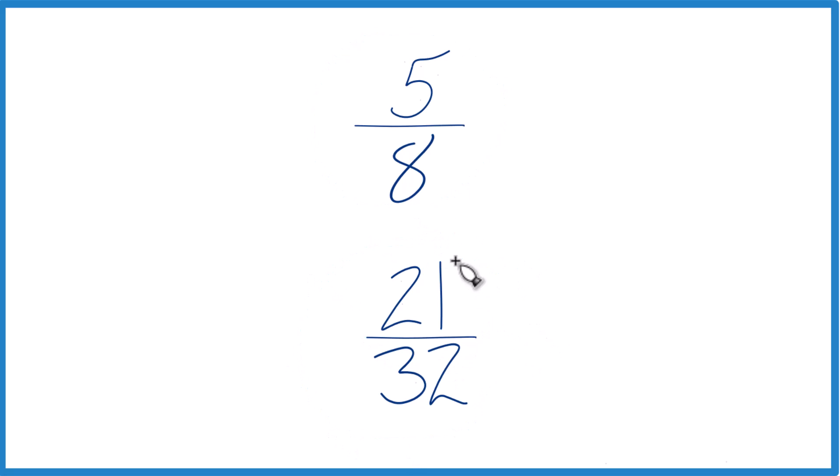So you could do it on a calculator, 5 divided by 8, get a decimal, 21 divided by 32, get a decimal, and just compare the decimals. That would tell you which one of these is greater.